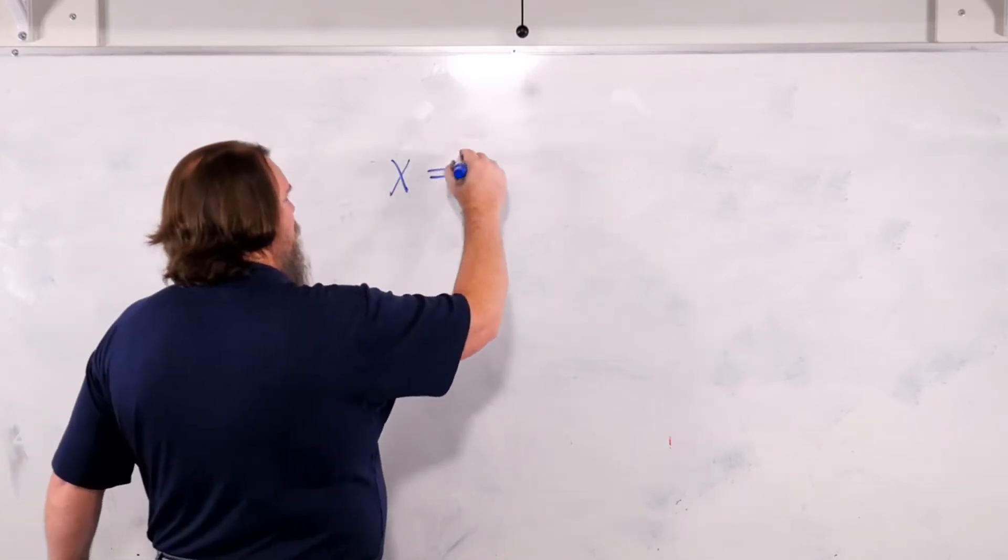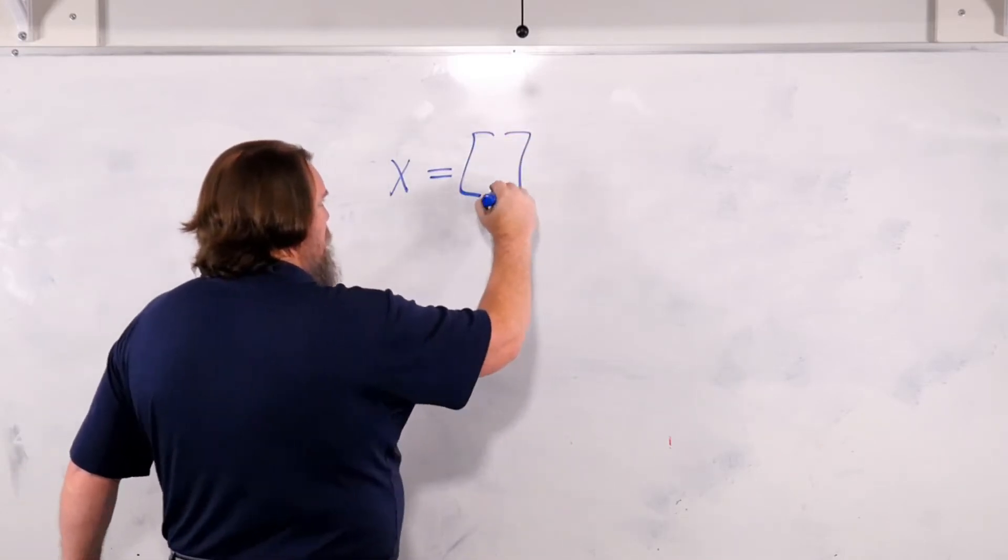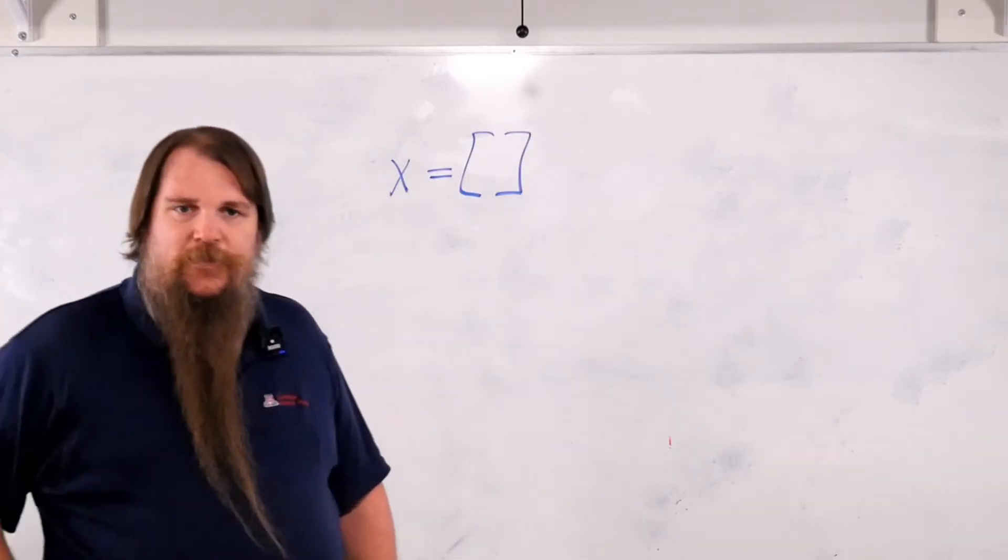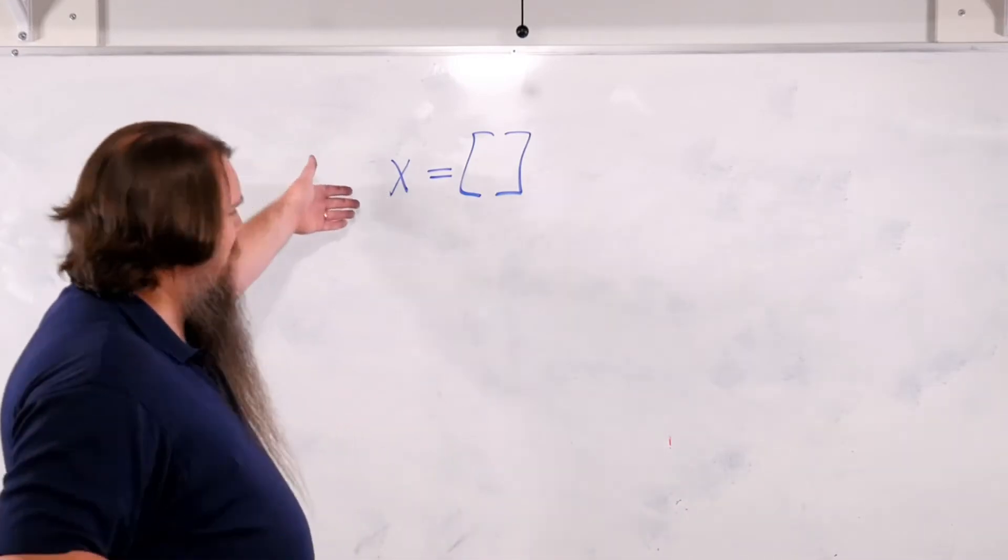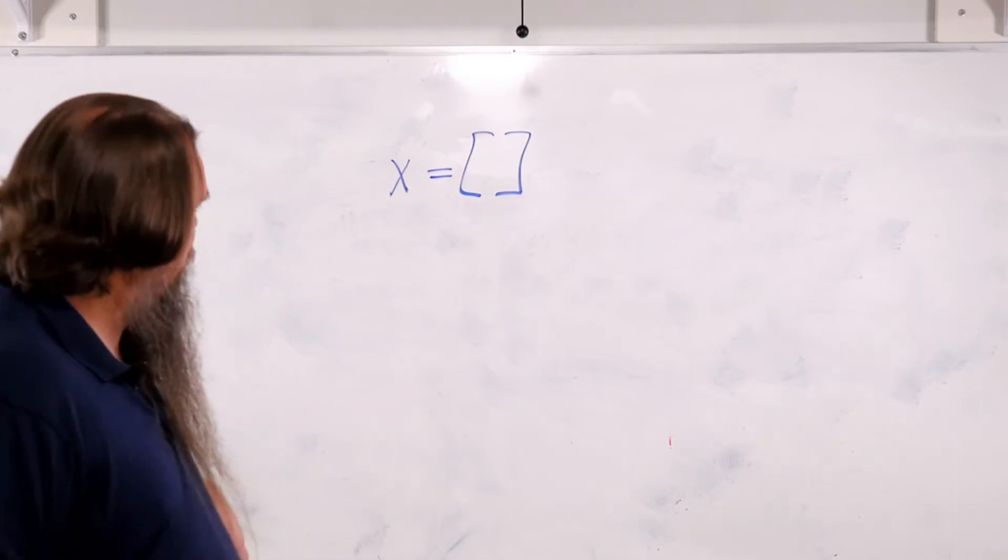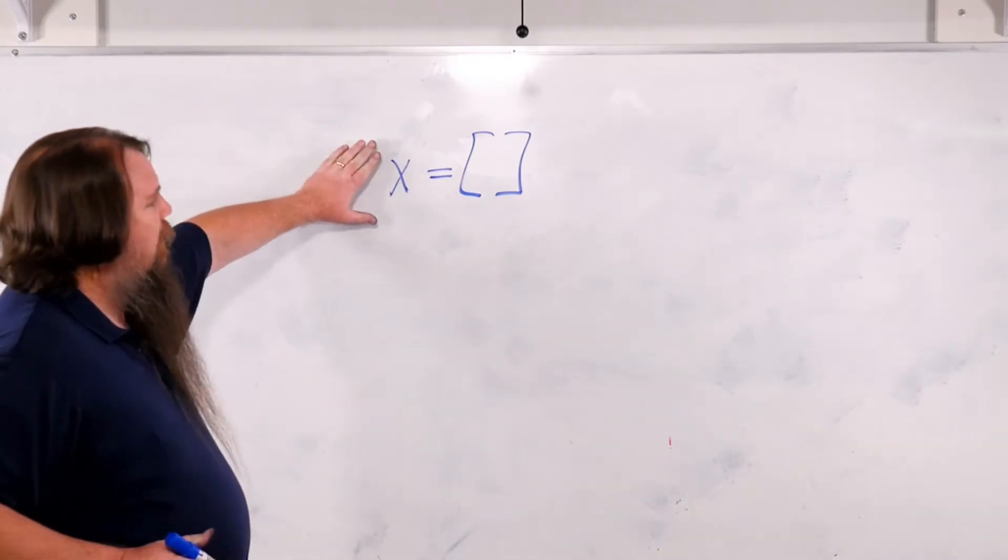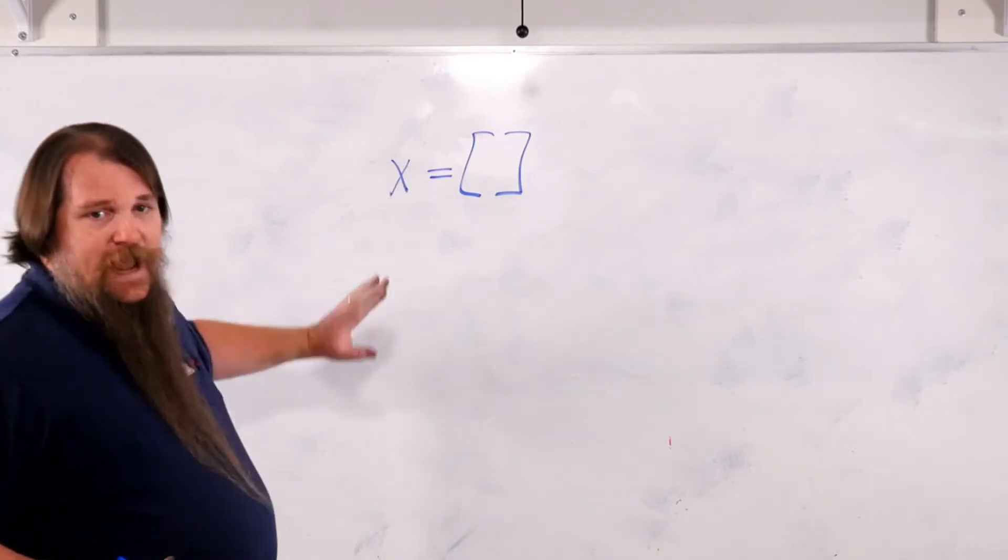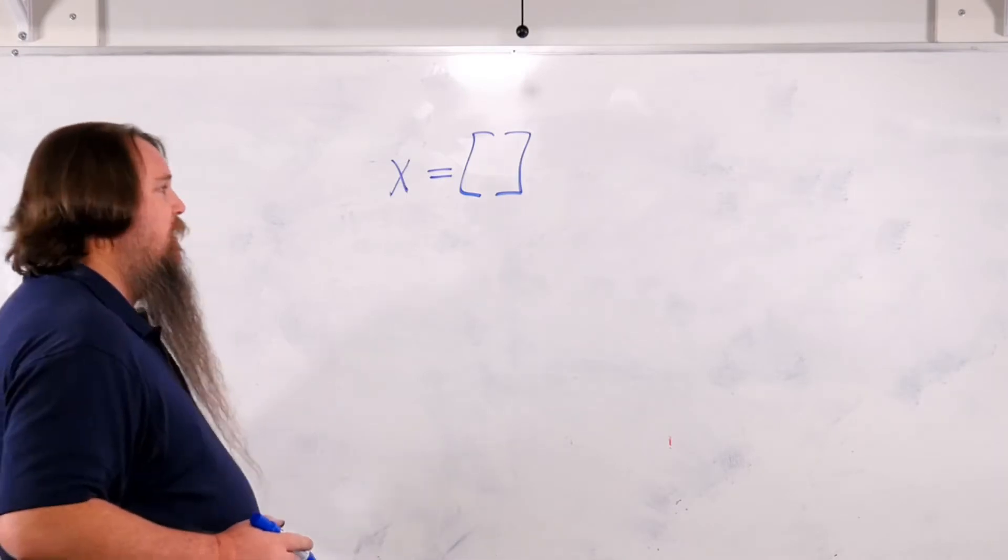All right, so let's start out with x equal an empty list. This is a classic thing that you're going to do very often. Very often you're going to do this in a loop, but I haven't shown you loops yet. All right, so right now x is an empty list.